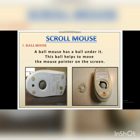Number 1: Ball mouse. A ball mouse has a ball under it. This ball helps to move the mouse pointer around the monitor on the screen. Children, can you see the first picture? There is a small rubber ball which helps the mouse pointer to move around the monitor — wherever we want to point, it helps us to go to that particular point. In the second picture also, there is a small rubber ball which helps to move around the monitor.